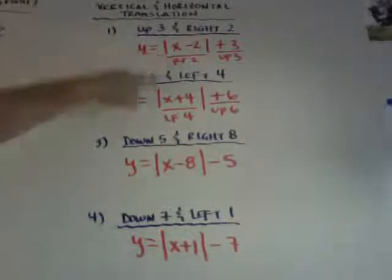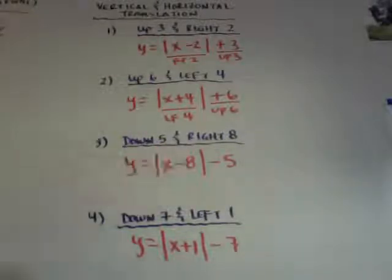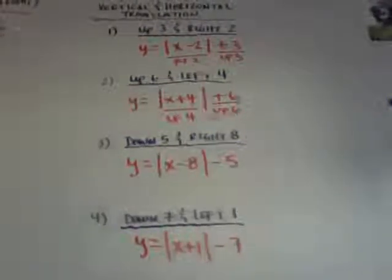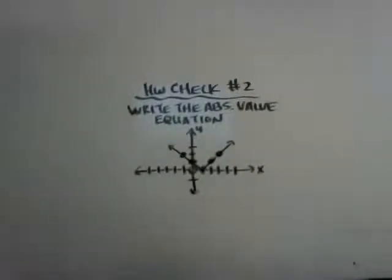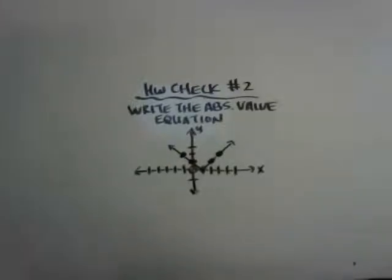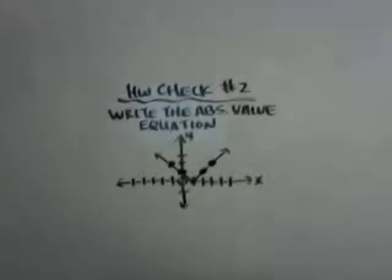I put these under here on these two so you can see. And then these are just writing it out. So here's your homework check number 2. Please write the equation, the absolute value equation, for this graph. And I'm going to try to make it very clear so you can see it. That's what you have to do for tonight. And that's 6.8. Take care.